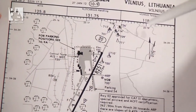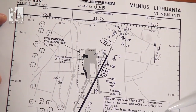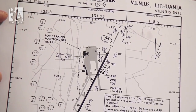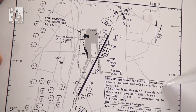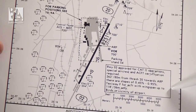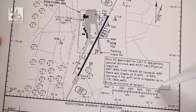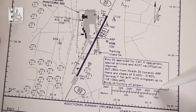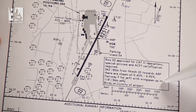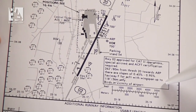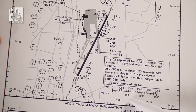On top of that, right here you can see some information regarding the runways — regarding the runway length, slopes, that taxiway Foxtrot is for aircraft with a wingspan of up to 36 meters only, that there are birds in the vicinity of the airport. And below that for the whole map you can see the scale.